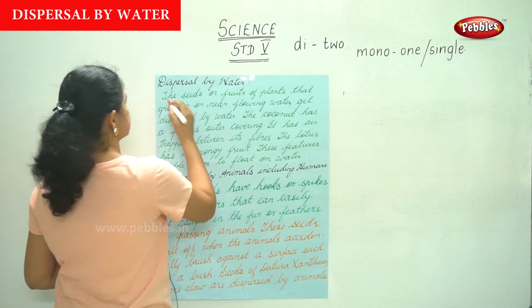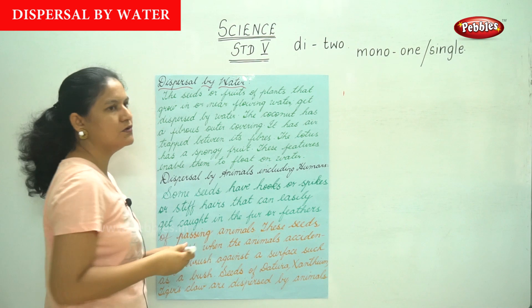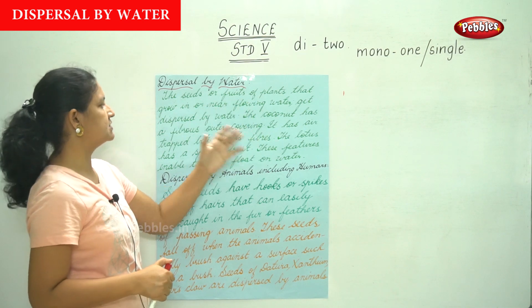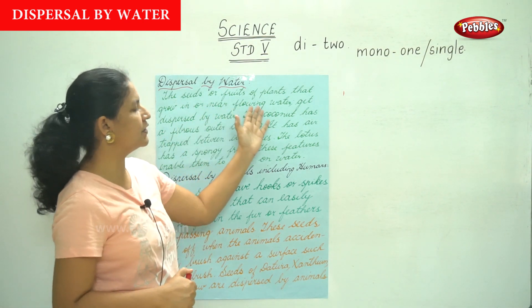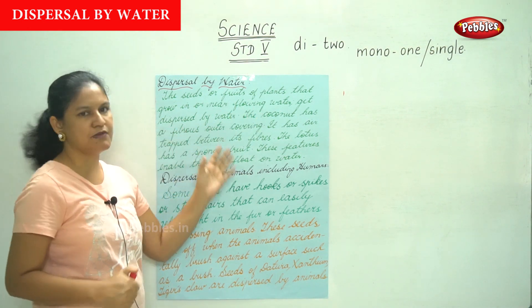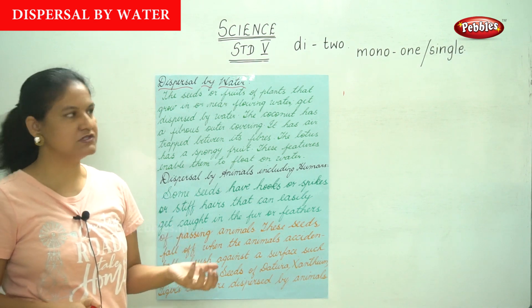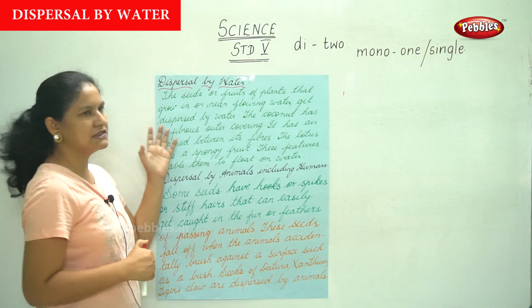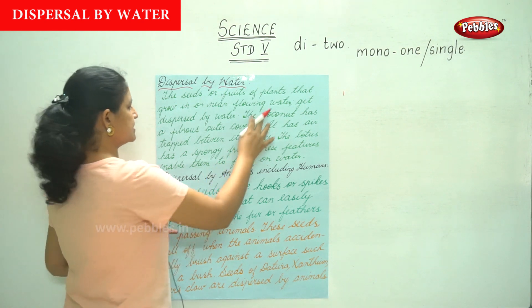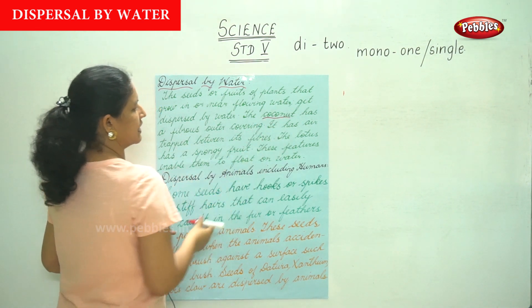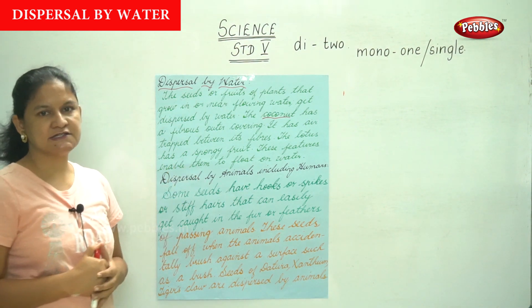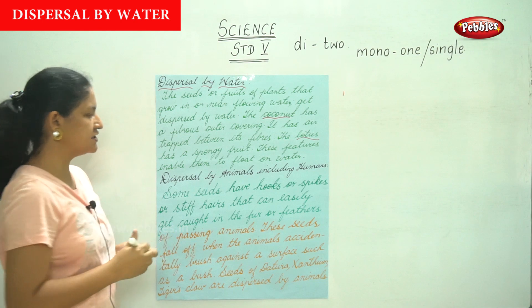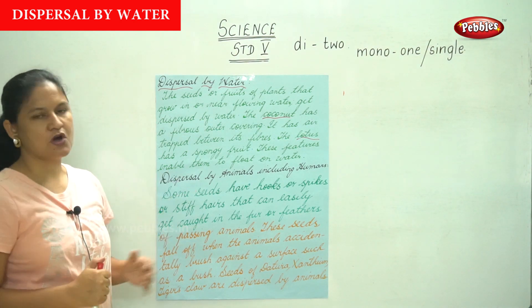Next is dispersal by water. The seeds or fruits of plants that grow in or near flowing water get dispersed by water. The coconut has a fibrous outer covering and has hair trapped between its fibers. The lotus has a spongy fruit. These features enable them to float on water.